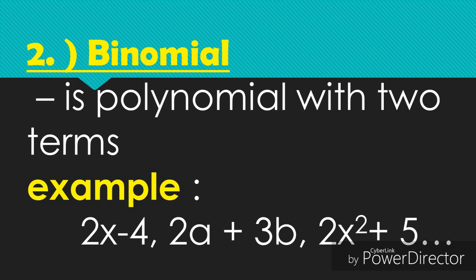Number two is binomial. A binomial is a polynomial with two terms. Example: 2x minus 4 — the first term is 2x and the second term is negative 4. Another example is 2a plus 3b, and also 2x squared plus 5, where the first term is 2x squared and the second term is positive 5.